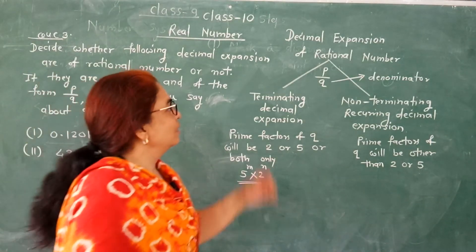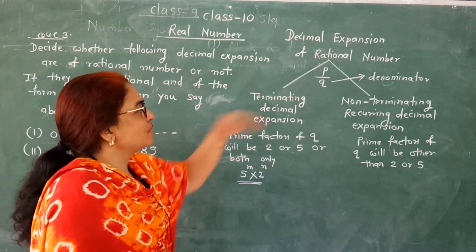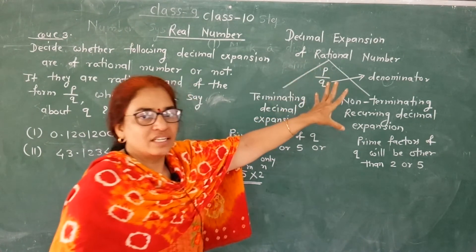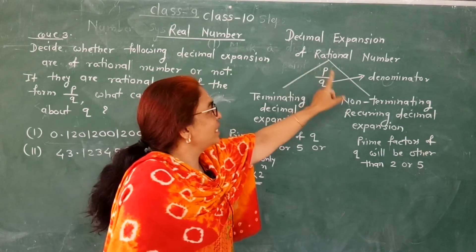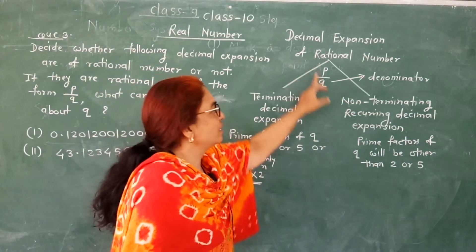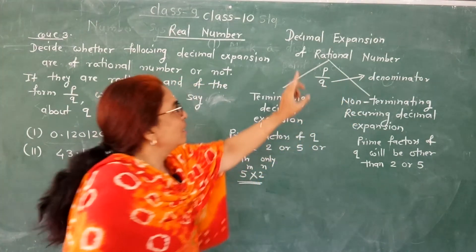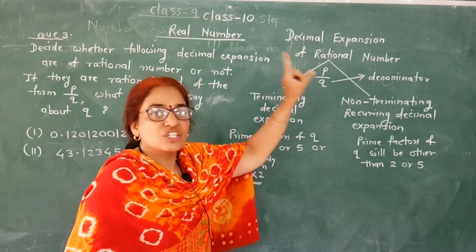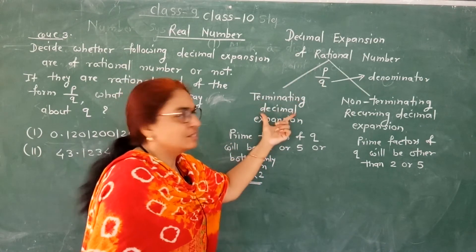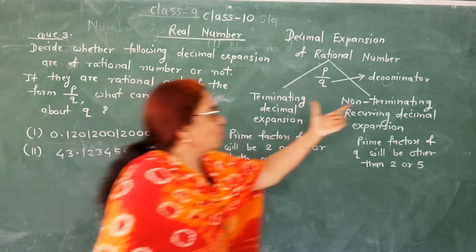Good morning students. Today we will revise decimal expansion of rational numbers. A rational number can be written in the form of p upon q where p is numerator and q is denominator. Decimal expansion of rational numbers are of two types: terminating decimal expansion and non-terminating recurring decimal expansion.